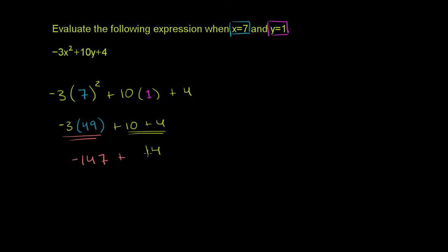And to that, we are going to add 14. Let me make sure I do this right. If I had 147 minus 14, that would be 133. So this is going to be -133. -147 plus 14, yep, -133. And we are done.